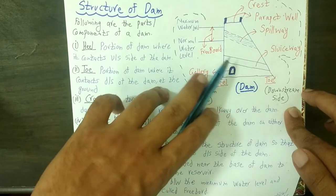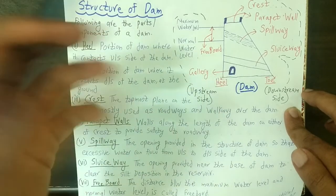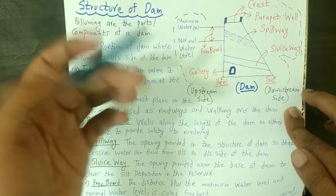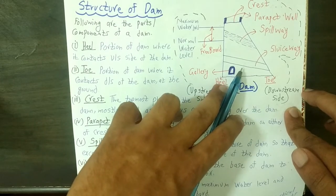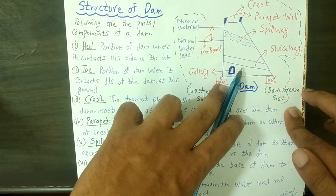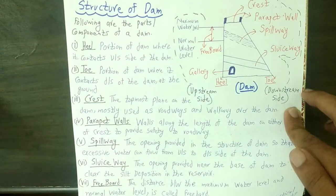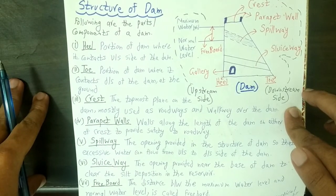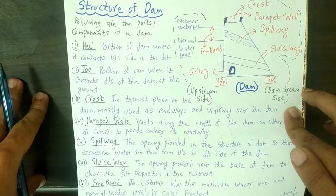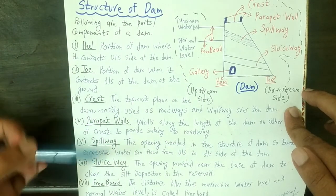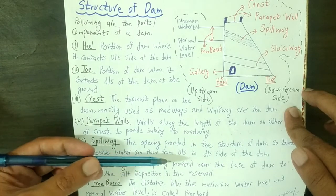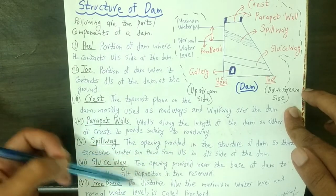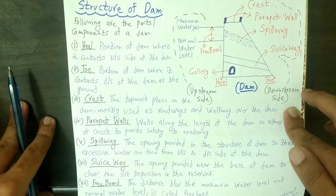This opening near the base, known as the sluiceway, controls the accumulation of silt and prevents silt deposition in the water. Its purpose is to control silt deposition in the water or silt accumulation in the stream or river water, so that the reservoir remains free from silt deposition.